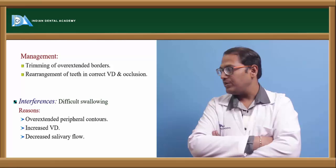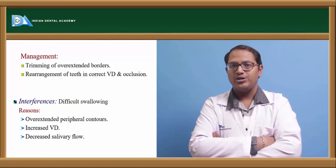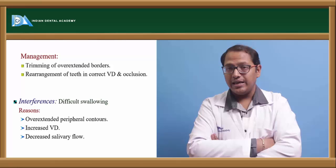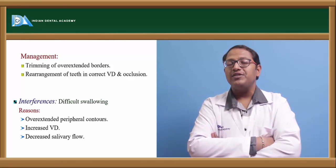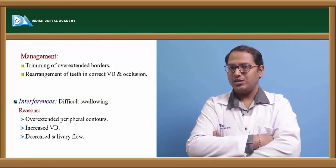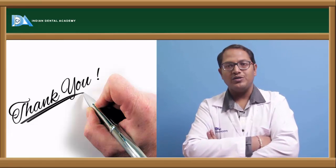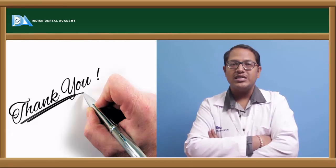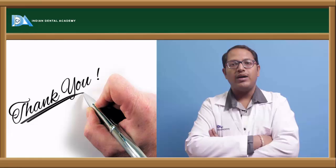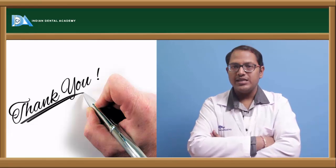Difficulty in swallowing can be caused by over-extended peripheral borders, incorrect vertical dimension, or decreased salivary flow. The ideal saliva type for denture retention is seromucous saliva. If the patient has mucous-predominant saliva, it is too thick and will dislodge the denture. If saliva is too thin, interfacial surface tension is compromised. Seromucous saliva provides the best quality of denture retention.